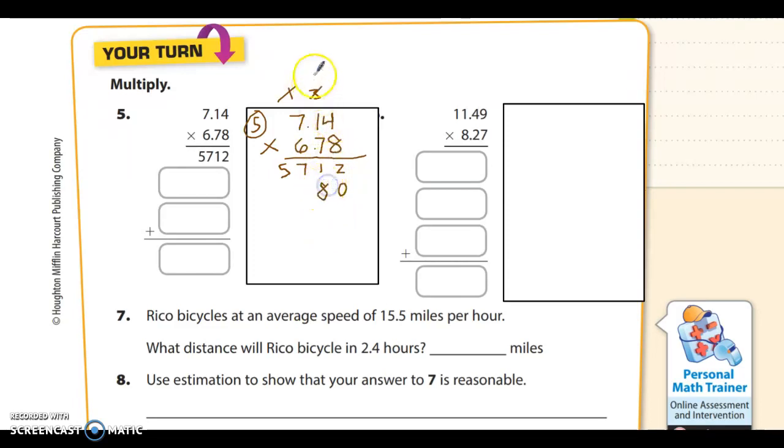7 times 4 is 28. 7 times 1 is 7, plus 2 is 9. And 7 times 7 is 49. I'm going to erase all those miscellaneous numbers at the top. And I'm getting ready to do my hundredths place, which means two zeros here. My first answer has to go straight down from that.